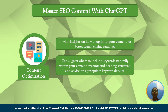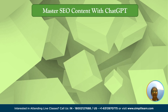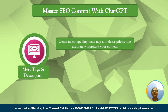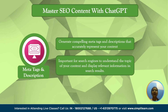Here we saw the number of optimizations suggested by ChatGPT for our content. Next we have meta tags and descriptions. ChatGPT can help you generate compelling meta tags and descriptions that accurately represent your content. These elements are important for search engines to understand the topic of your content and display relevant information in search results.